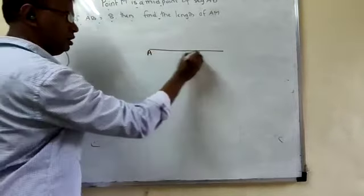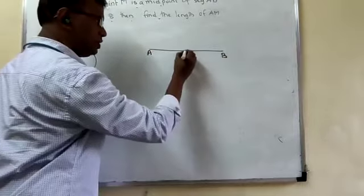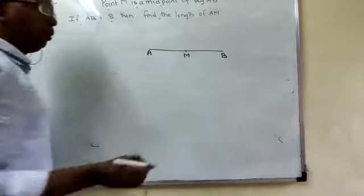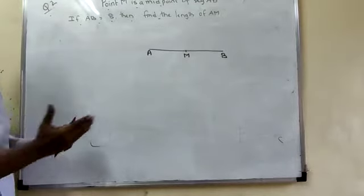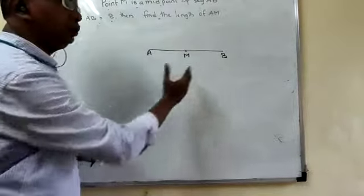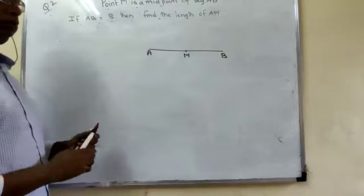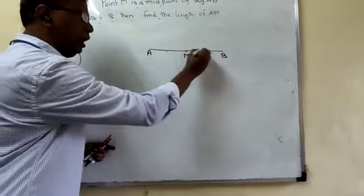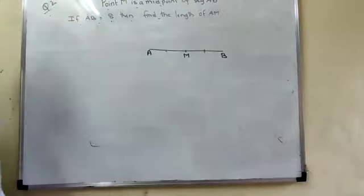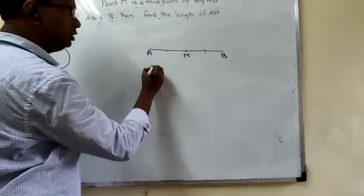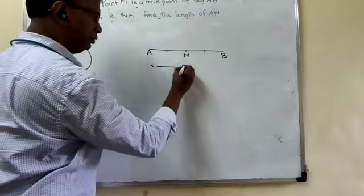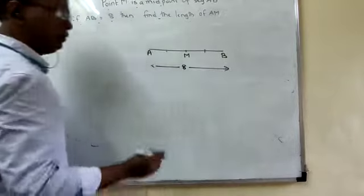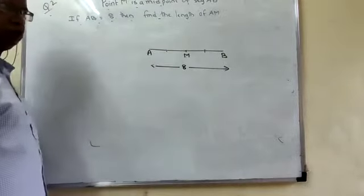This is AB. M is a midpoint. What a midpoint means? A midpoint divides the segment into two equal parts. Means AM and MB both are equal. What is AB given? AB is 8. And we have to find out AM.